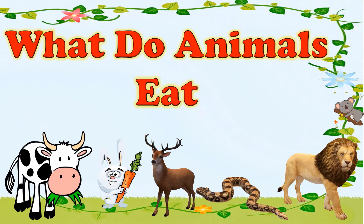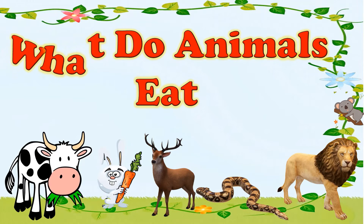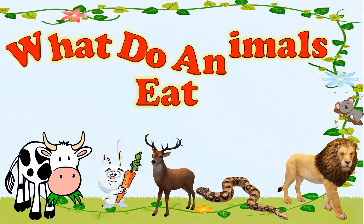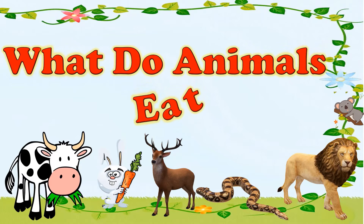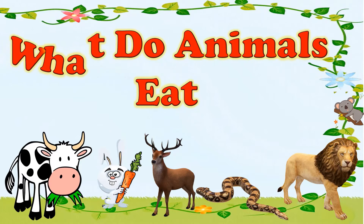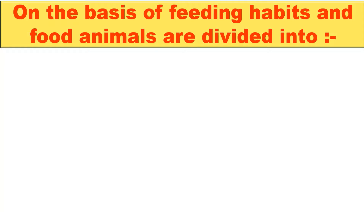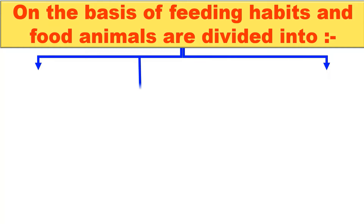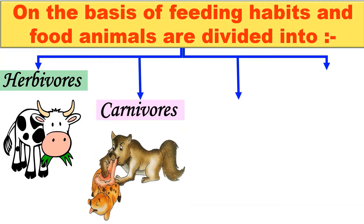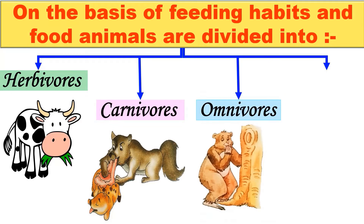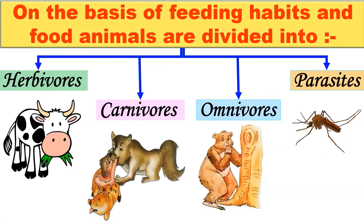Hi children and welcome back. For today's lesson we are going to learn what do animals eat. On the basis of feeding habits and food, animals are divided into four groups and they are herbivores, carnivores, omnivores and parasites.